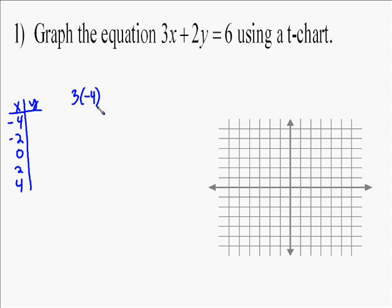I usually start with negative 4, negative 2, 0, 2, and 4. Those are just good round numbers to work with.